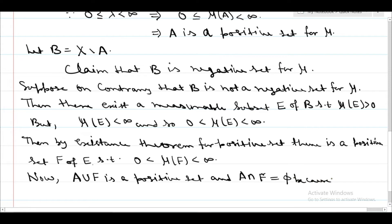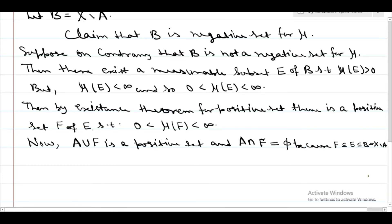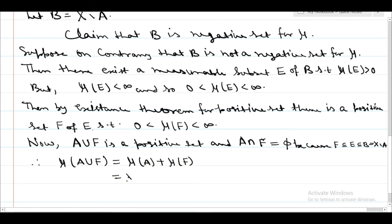Because F is a subset of E and E is a subset of B which equals X minus A. Therefore mu of A union F equals mu of A plus mu of F. And since mu of A equals lambda, this gives lambda plus mu of F, which implies mu of A union F is greater than lambda.